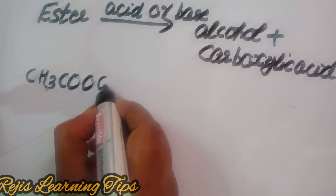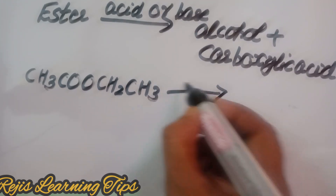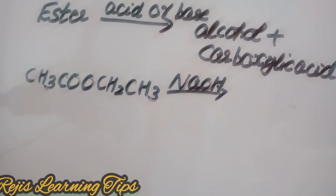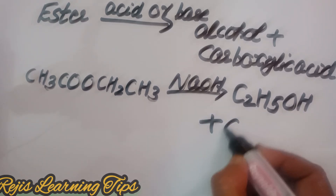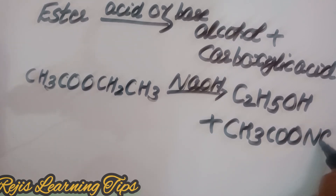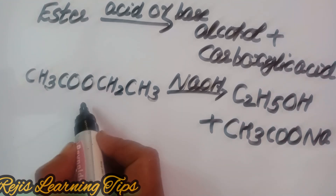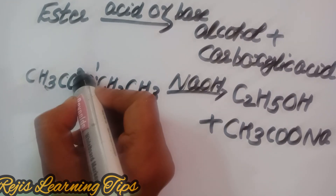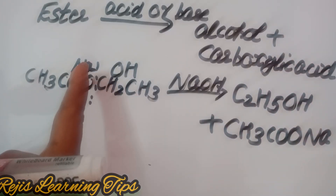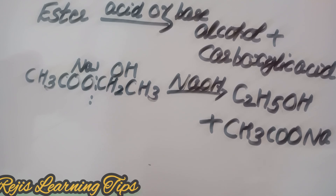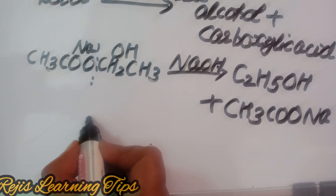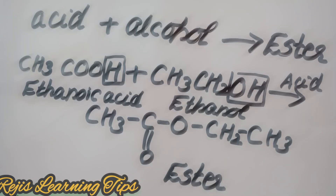For example, the ester CH3-COO-CH2CH3 reacts with a base, NaOH, to form alcohol C2H5OH plus the sodium salt CH3COONa. This reaction is the saponification reaction. An important question: what is the byproduct of the saponification reaction? The byproduct is glycerol.